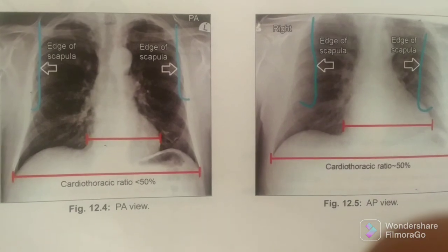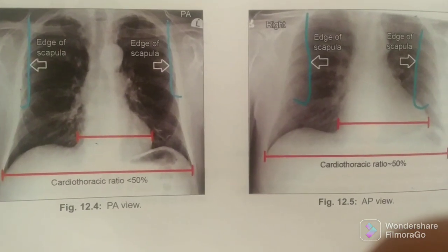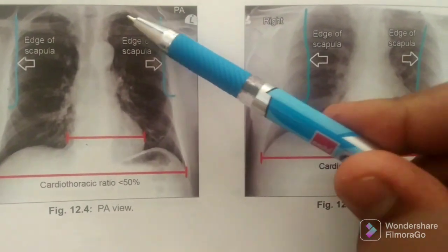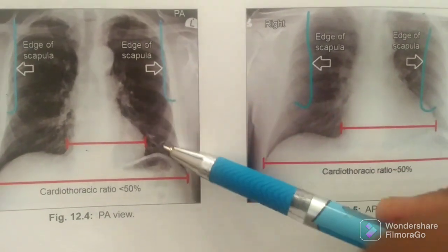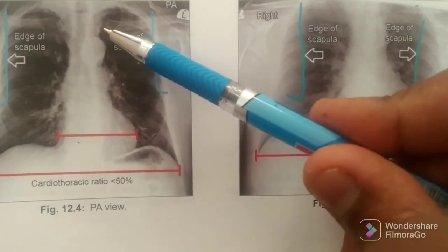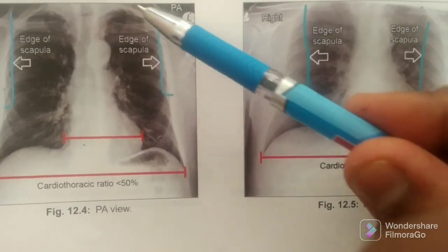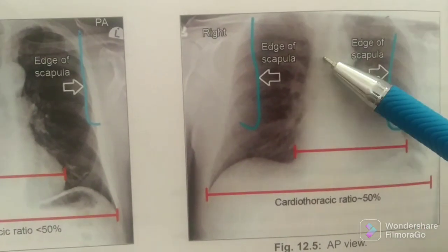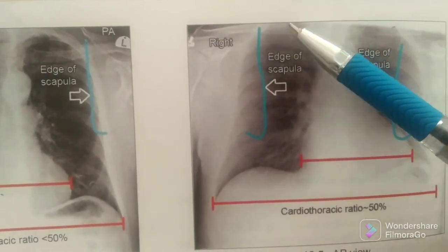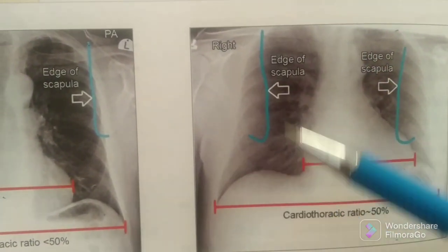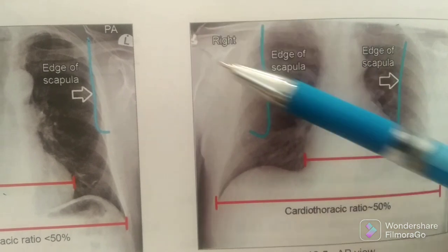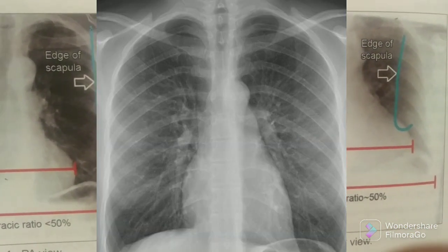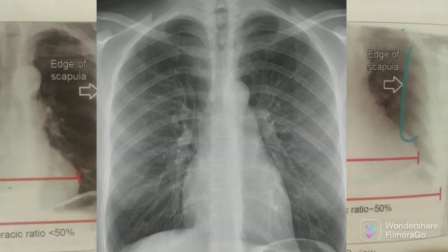In PA view, the first difference we need to notice is the clavicle. The clavicle lies over the lung field — these are the lung fields, and the clavicle lies over them in the PA view. Whereas in AP view, the clavicle is above the lung field and is oblique, which is more clearly visible in the next image.